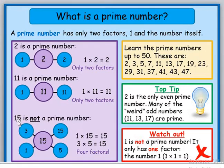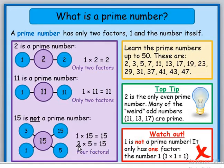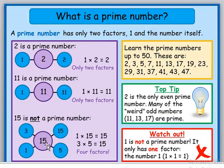Consider number 15 — it is not a prime number. It can be obtained by multiplying 1 by 15, but also by multiplying 3 by 5, giving us 1, 3, 5, and 15 as factors — altogether four factors. When a number has more than two factors, it is considered not prime.